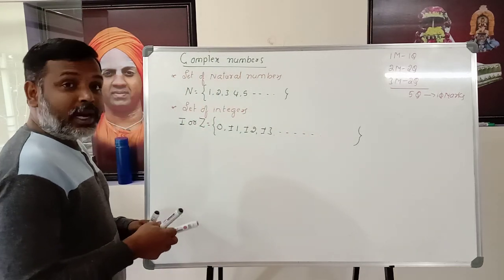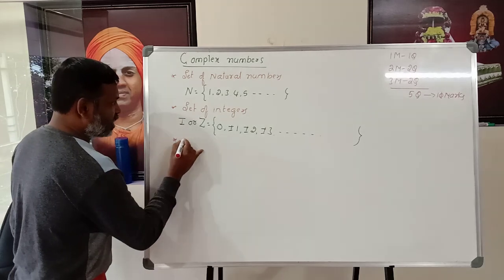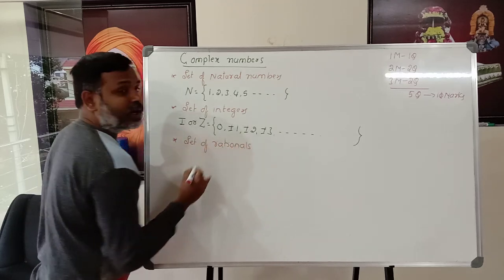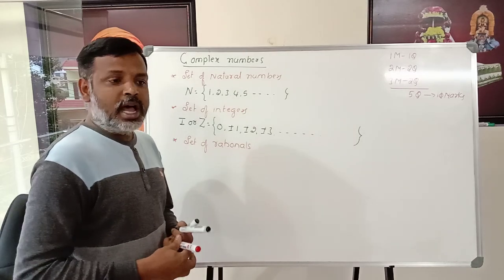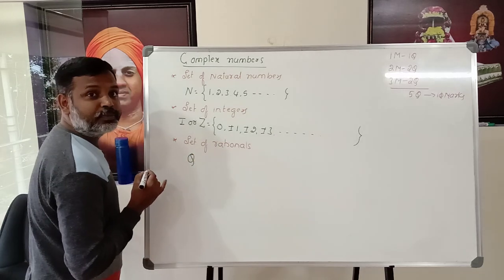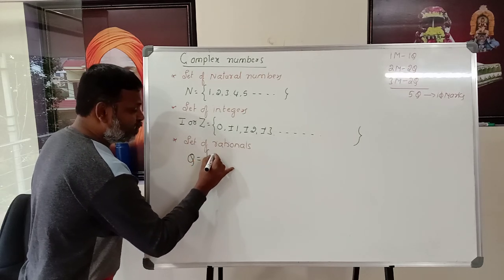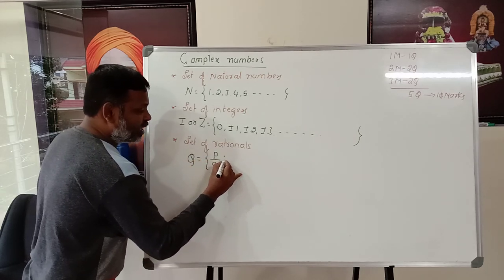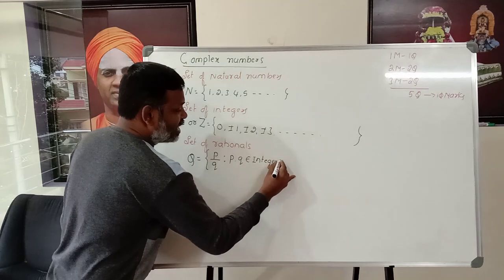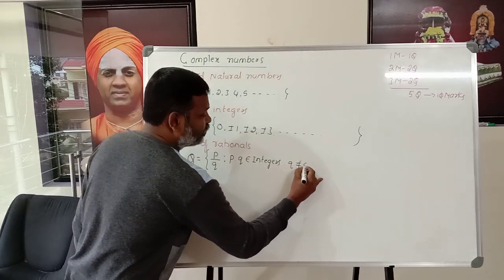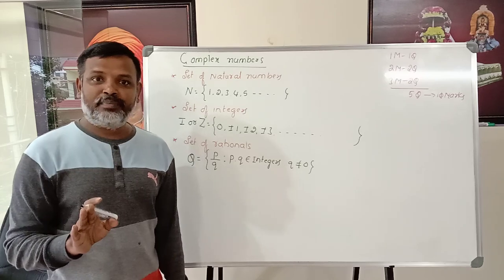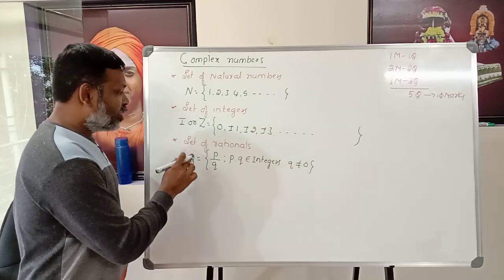The third very important number system is the set of rationals, also known as fractional numbers. It contains numbers of the form p/q, such that p and q are integers and the denominator q should not be equal to zero. For example: 1/2, −3/2, 7/5, −10/3 — these are all rational numbers.